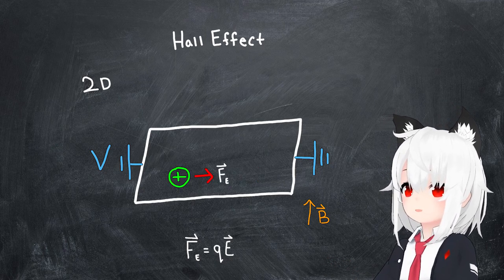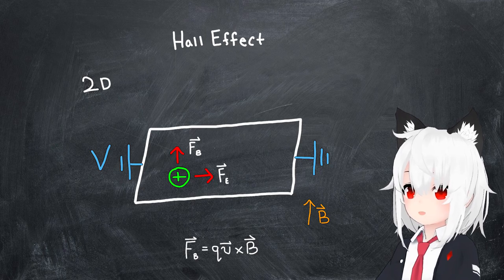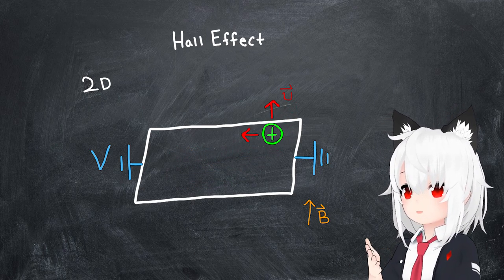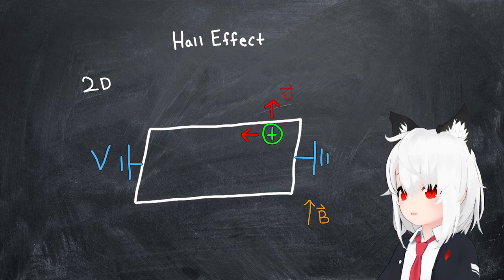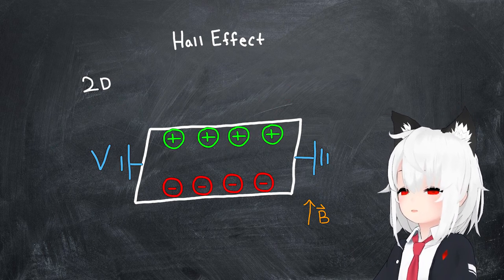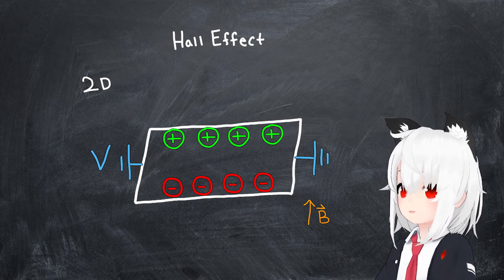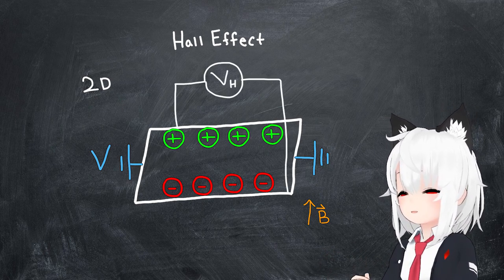Since we also have a magnetic field, the Lorentz force also plays a role, and this tends to push particles in a direction which is perpendicular to their velocity vector. The result would be a net buildup of charge on transverse ends of the material, and the resulting voltage can be measured as a Hall voltage.